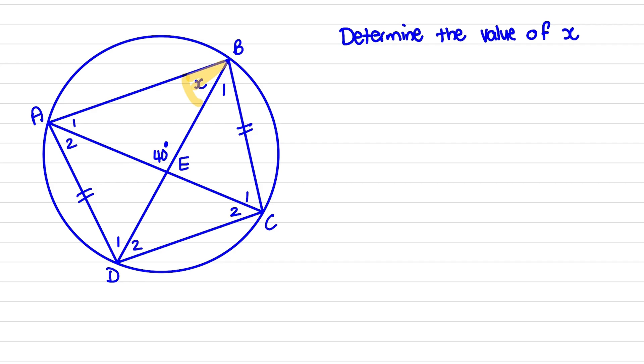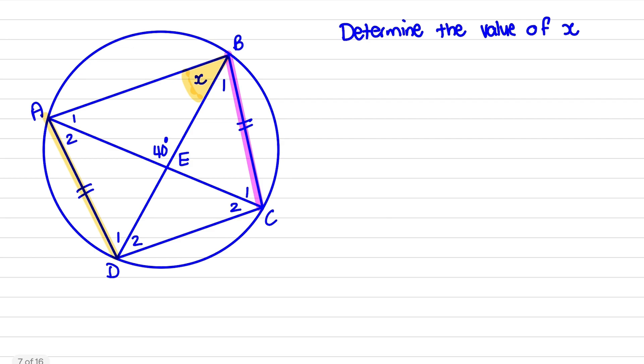So what we see is that x is an angle on the circumference of the circle. Other information that we have is that the line AD is equal to the line BC, and we also have this intersection point at E.